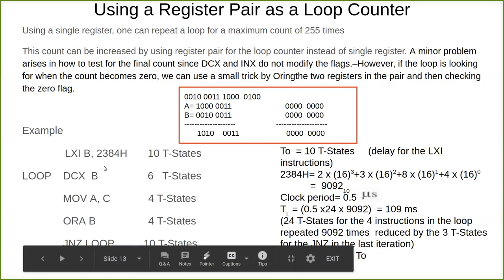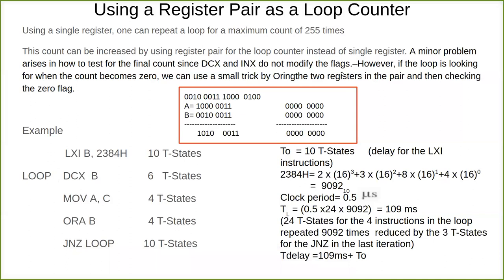But here since it is a register pair, how to do that? Because DCX and INX, they do not modify the flags. Only if the flag bit is modified will we be able to find out whether it has reached 0. So a little bit of a trick we have to do.